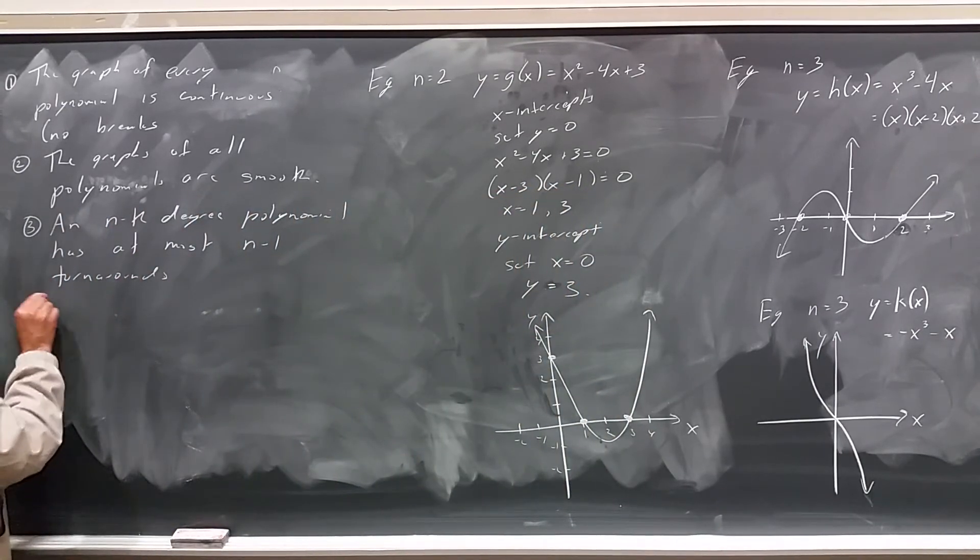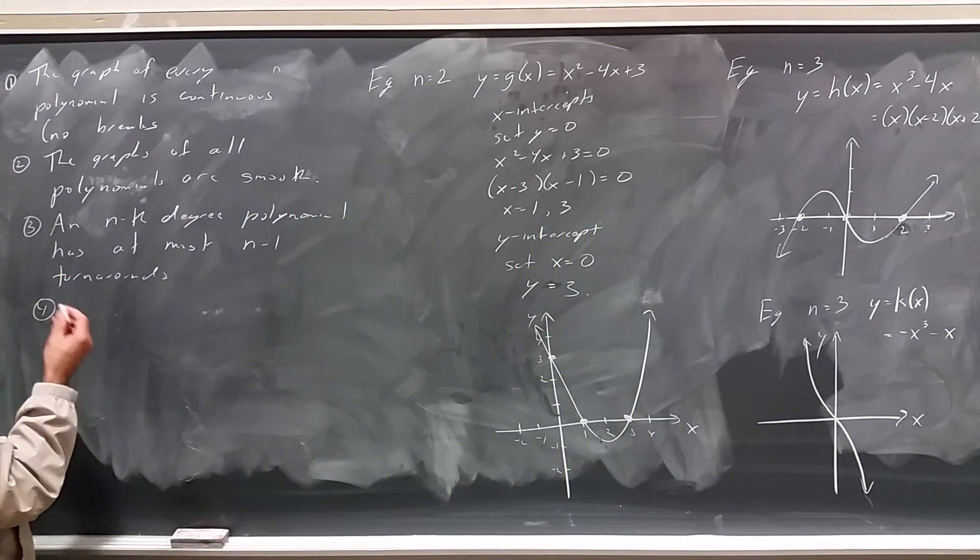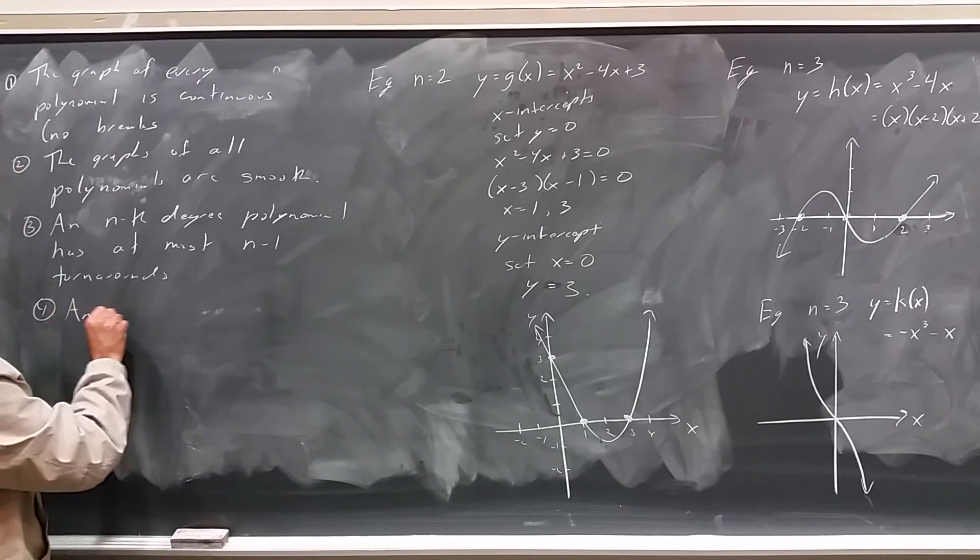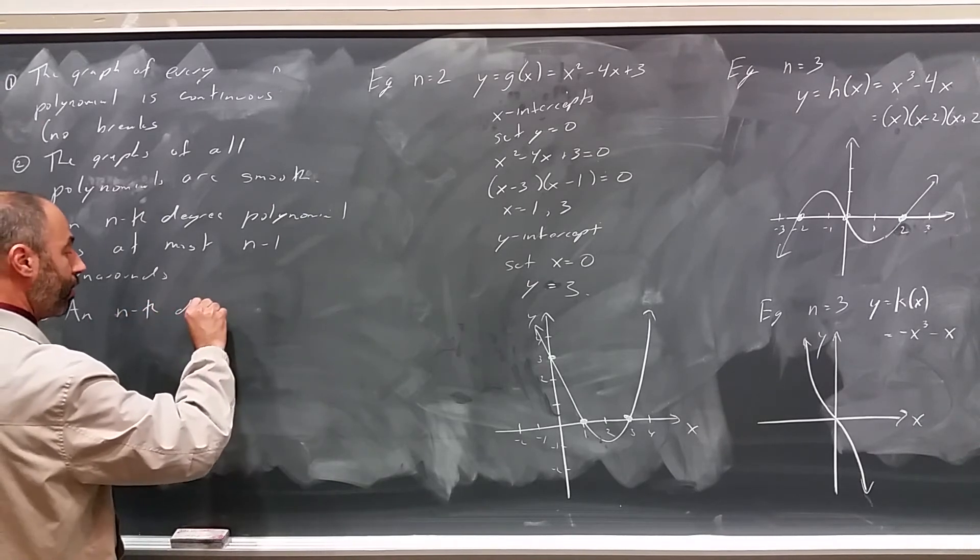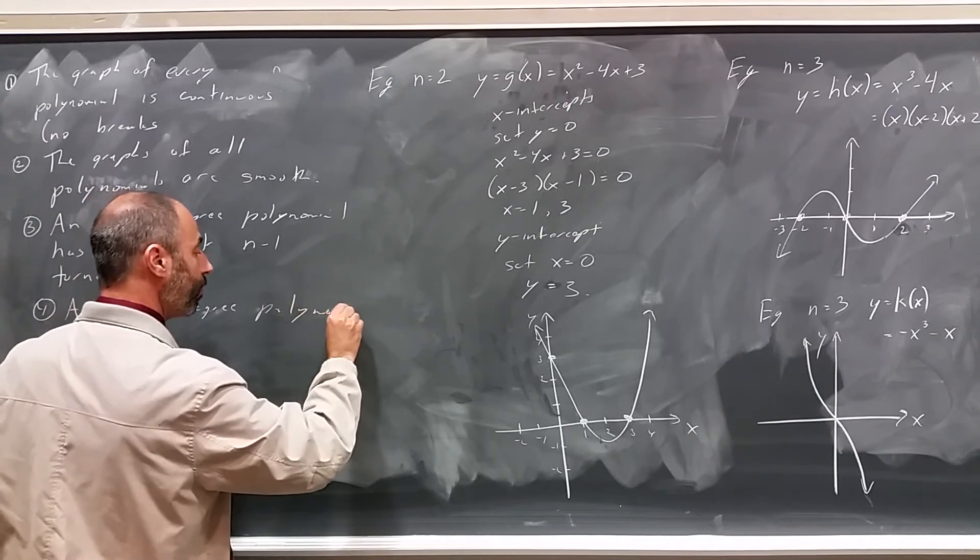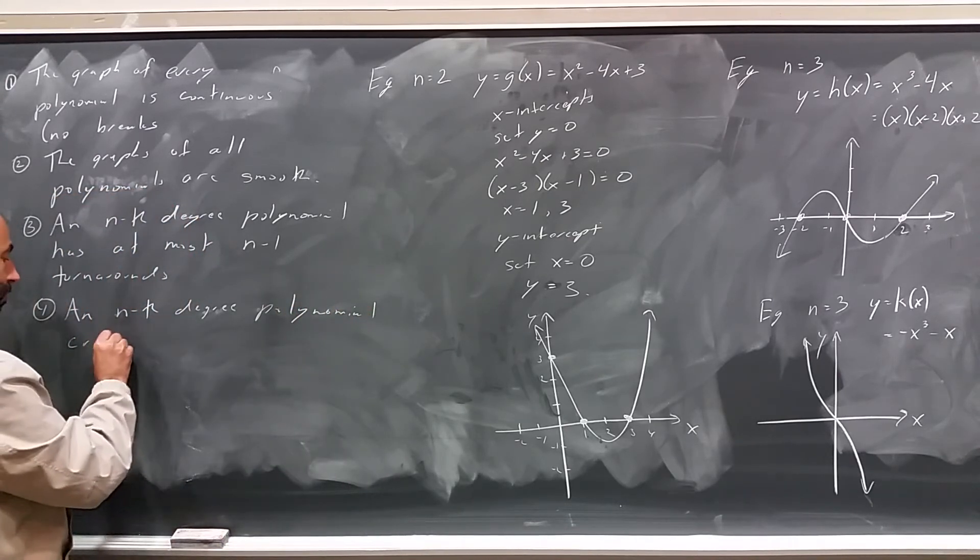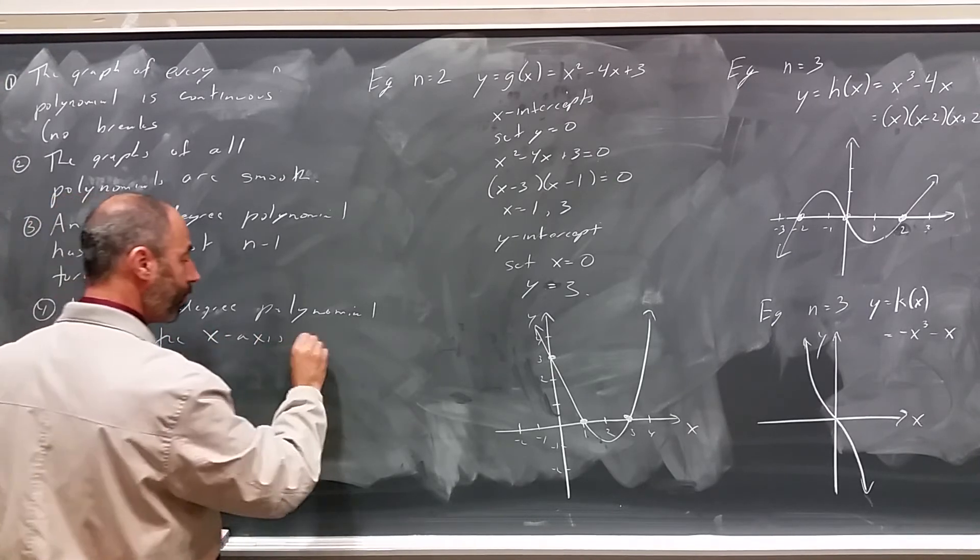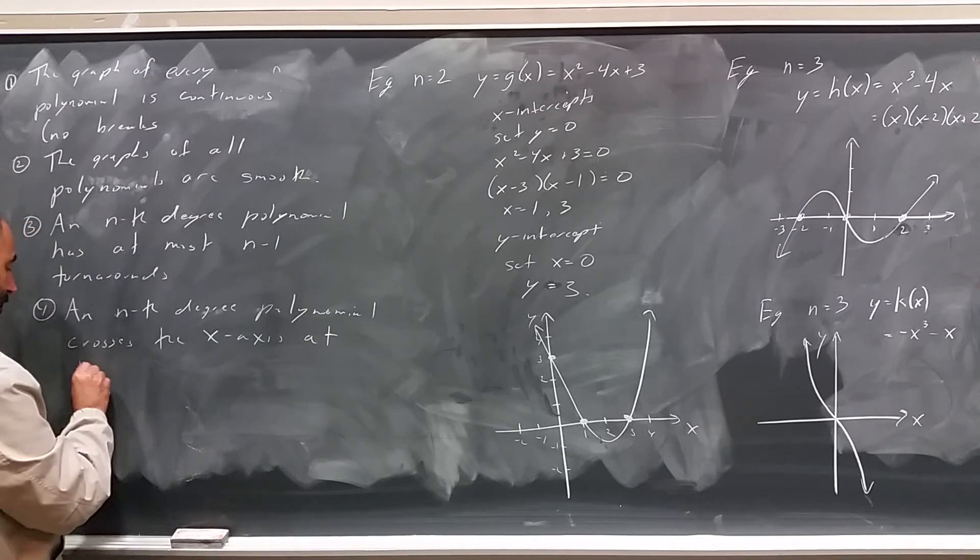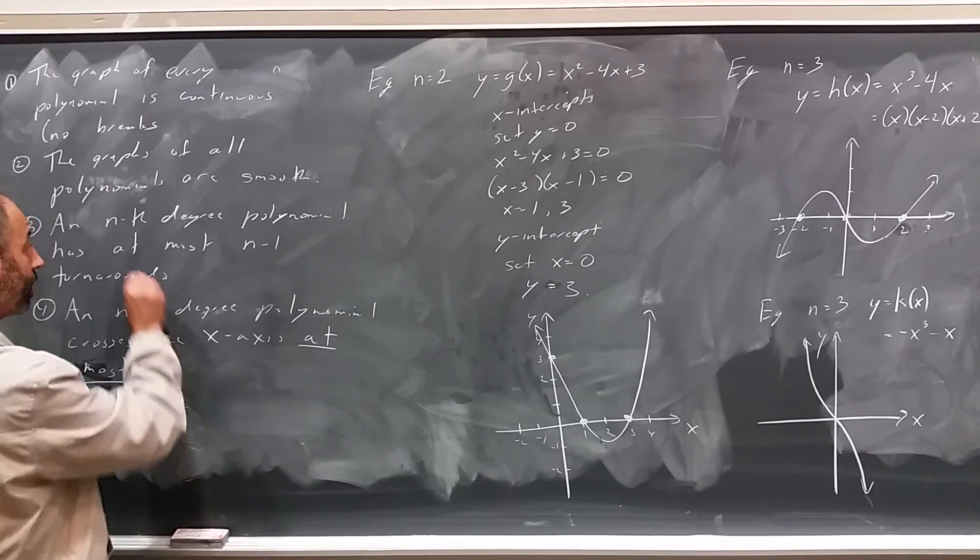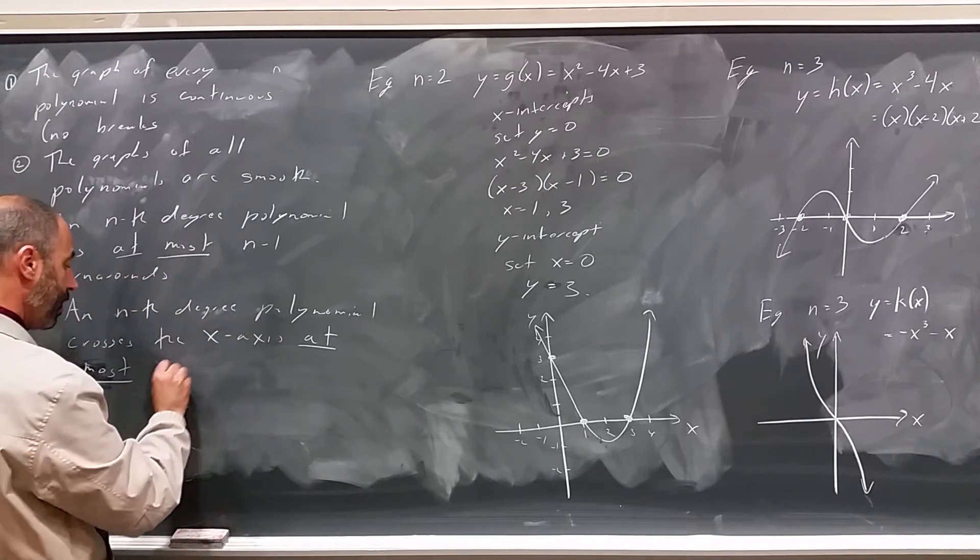In a similar vein, an nth degree polynomial crosses the x-axis at most n times.